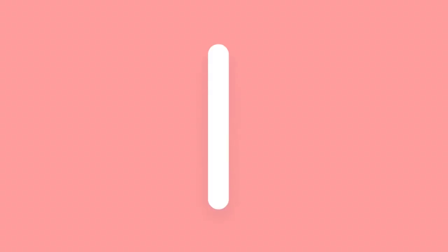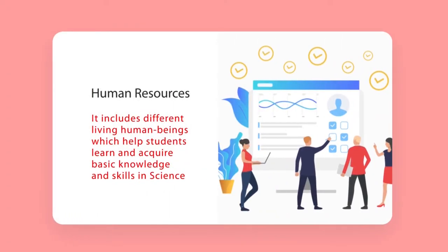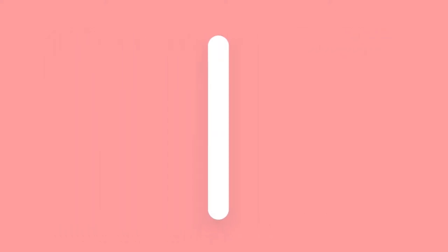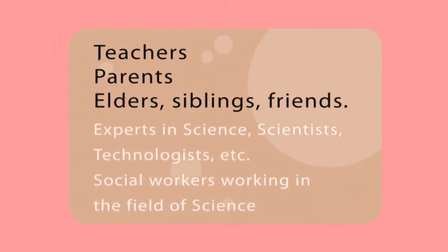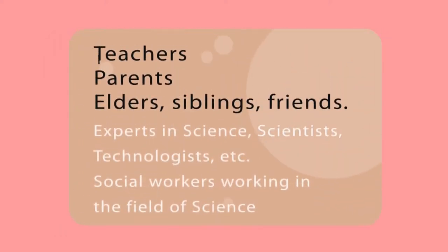Human resources include different living human beings who may help students learn and acquire basic knowledge and skills in science. These may be teachers, parents, elders, siblings, friends, experts in science, scientists, technologists, and social workers working in the field of science.